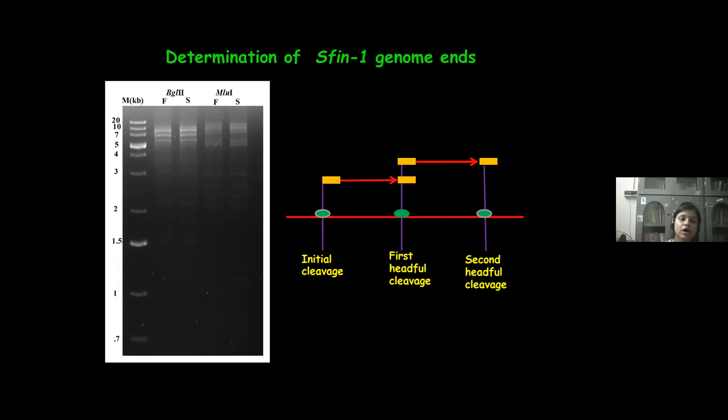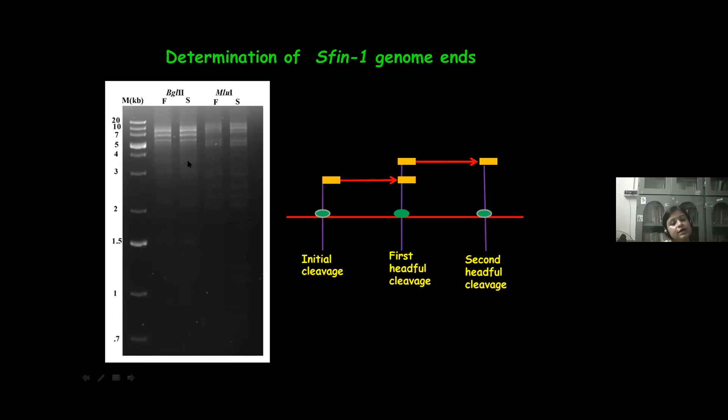For a circularly permutated headful packaging phage chromosome, the site of initiation cleavage is not precise. So alternative initiation cuts are spread over regions on concatemers. As a result, chromosome lengths of individual variants are imprecise, and a blurred background was observed both in fast-cooled and slow-cooled reactions.